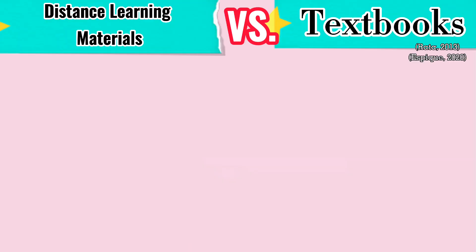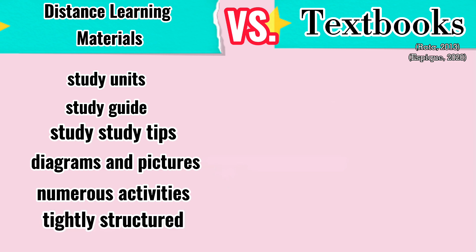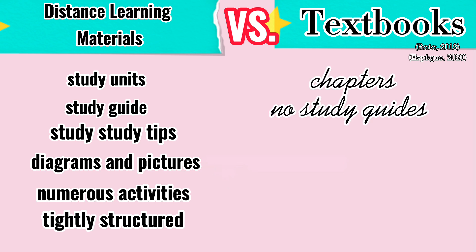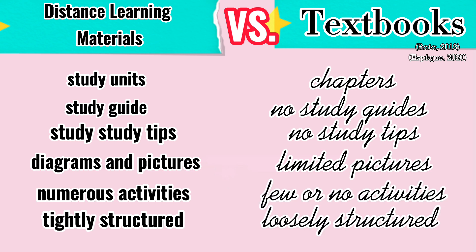Distance learning materials typically are divided into study units representing a week's work, include a study guide on how to use the materials and how to study by oneself, include study tips, include diagrams and pictures, include numerous activities, and are tightly structured. While textbooks typically are divided into chapters based on topics rather than study time, do not include study guides or study guidance, do not include study tips, include diagrams and pictures but are limited, have few or no activities, and are more loosely structured.